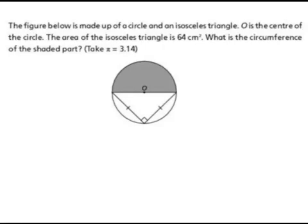Shall we see how to work out this problem. In this problem we have only one information which is area of isosceles triangle is 64 centimeter square.